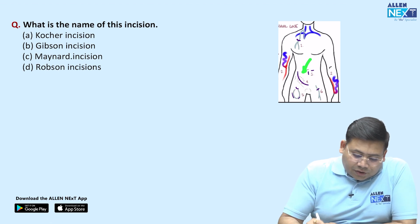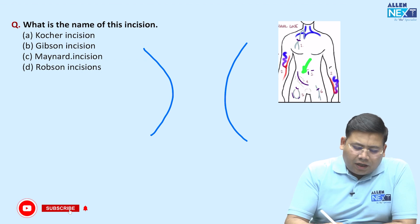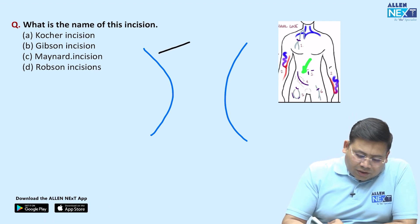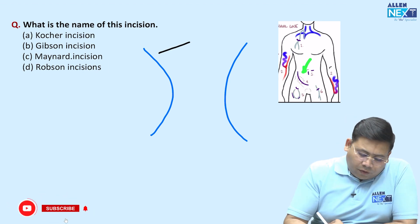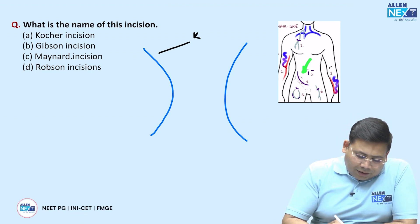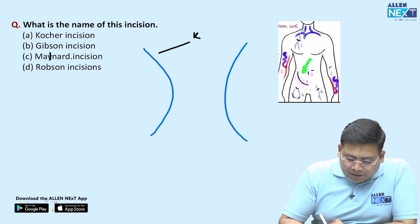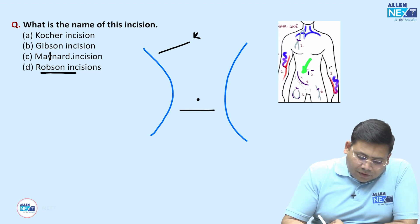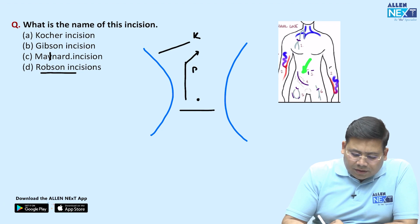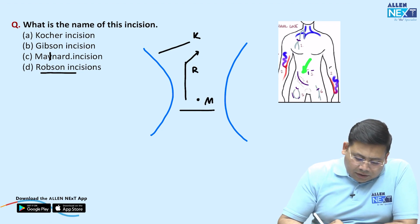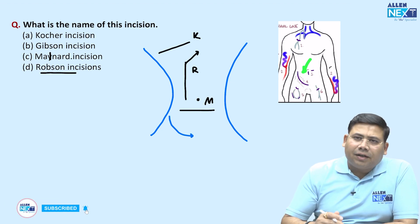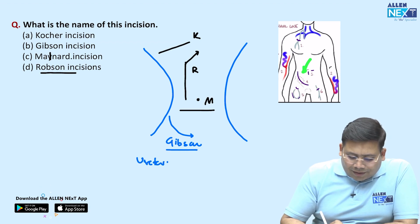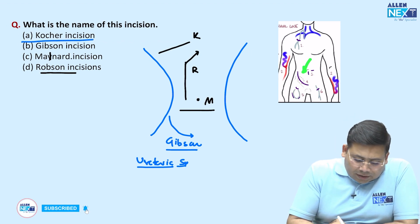There was a question on incisions — a curved incision towards the groin. Cocker's is the right subcostal incision used for gallbladder surgery. Maillard incision is a low transverse incision. Robson's incision is a paramedian incision towards the xiphoid. Gibson's incision is a curved incision going one centimeter above the inguinal ligament, used for ureteric surgeries. Gibson's incision is the answer here.